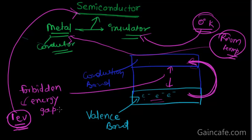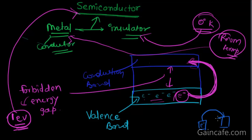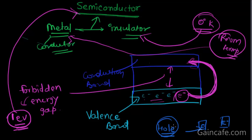The forbidden energy gap is one electron volt. Suppose one electron jumps from the valence band into the conduction band — what does it leave behind? It leaves a vacancy. Like if you have two boxes and an electron moves from one box to the other, it leaves a vacancy in the first box. That vacancy is known as a hole.